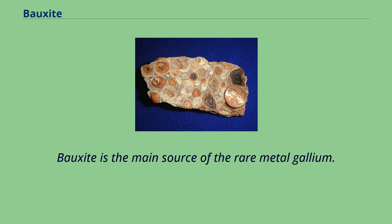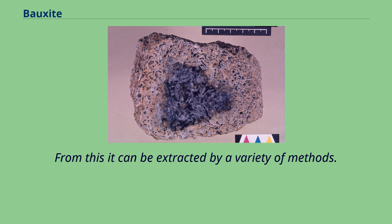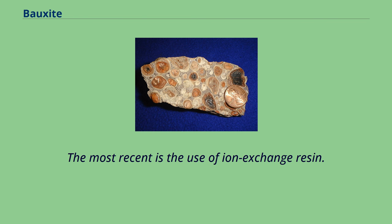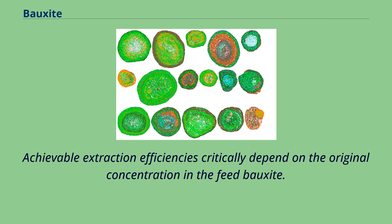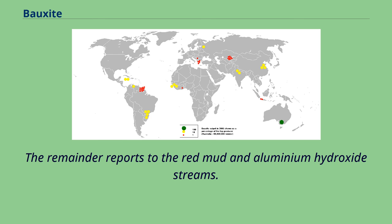Bauxite is the main source of the rare metal gallium. During the processing of bauxite to alumina in the Bayer process, gallium accumulates in the sodium hydroxide liquor, from which it can be extracted by a variety of methods. The most recent is the use of ion exchange resin. Achievable extraction efficiencies critically depend on the original concentration in the feed bauxite. At a typical feed concentration of 50 parts per million, about 15% of the contained gallium is extractable. The remainder reports to the red mud and aluminium hydroxide streams.